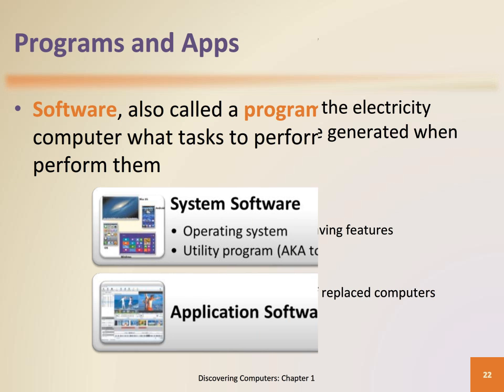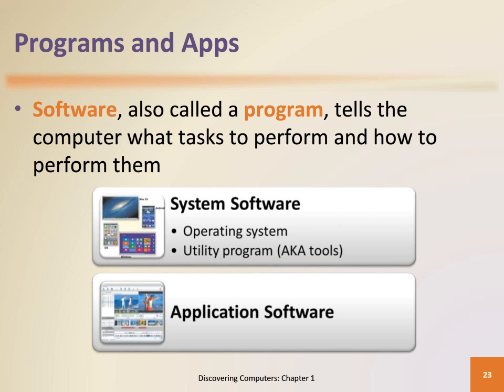Next, you will learn about computer software. Computer software consists of a series of instructions that tells the computer what to do and how to do it. Computer software is also known as a program. There are two categories of software: system and application. When your computer hardware is turned on, the first software that is used is the system software, which controls your computer.